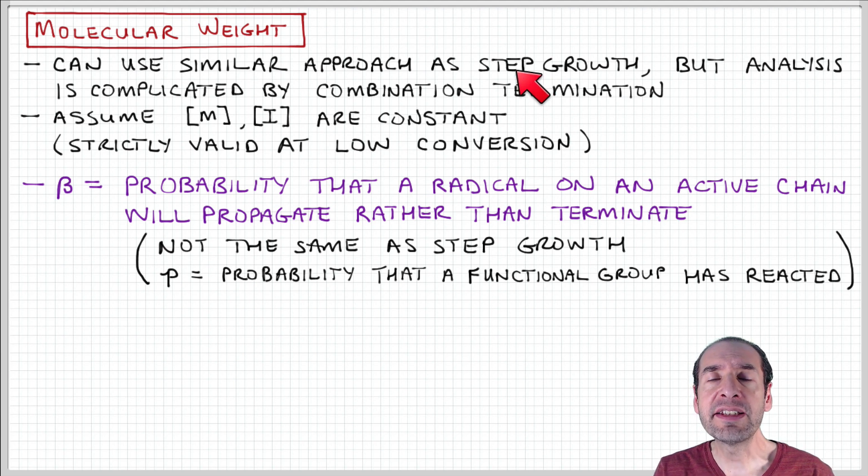But one thing that complicates our analysis is that there are two different termination mechanisms. In particular, combination termination, where two growing chains combine to form one dead chain. We've got to understand how that impacts the molecular weight distribution.